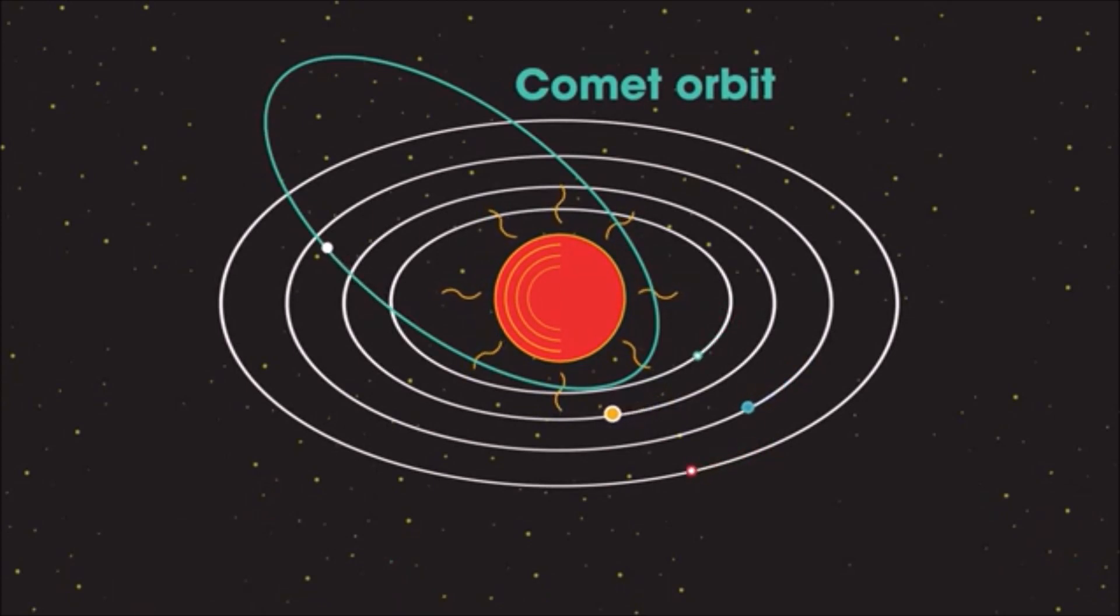Comets are similar to large, dirty snowballs, a few tens of kilometers across, that follow a huge elliptical path around the sun that may take decades, centuries, or longer to complete one orbit.